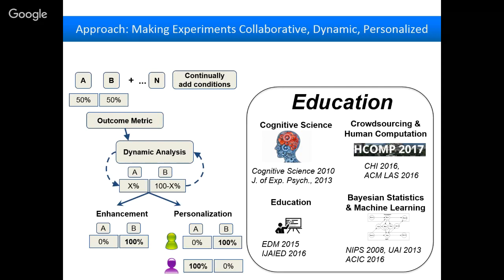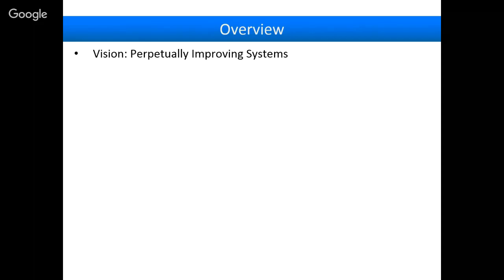Most software just doesn't support dynamic analysis, personalization, or continually adding conditions — Khan Academy, edX, Coursera, iDly won't do this out of the box. So I've developed a software requirement specification I call MOOClets, because we've applied it in MOOCs, but it applies to anything: apps for health behavior change, sending emails, on-campus courses. The key idea is that anytime you want to run an experiment assigning people different conditions or resources, if you implement it using the MOOClet specification, it guarantees you have the data structures, algorithms, and APIs to start experimenting and always transition to personalization or add new conditions.